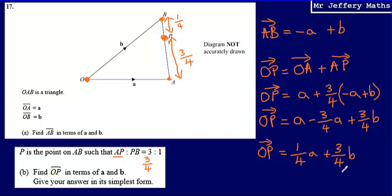So the final answer for part B: OP is equal to 1 quarter a plus 3 quarters b.